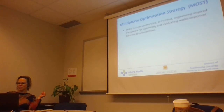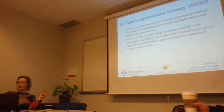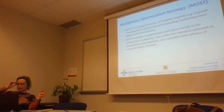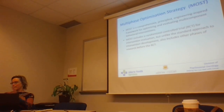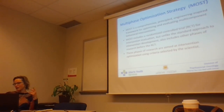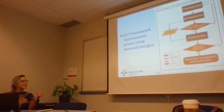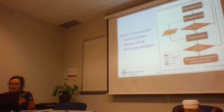MOST includes randomized controlled trials when you get further down through the process, but it also spends a lot of time on the earlier phases of research before you get to the RCT. It fits really well with the ORBIT model in phase one and into phase two. The idea with MOST is to optimize your intervention before you launch into the big, expensive trial. The preparation phase is like the very beginning of the ORBIT model where you're doing your basic science.